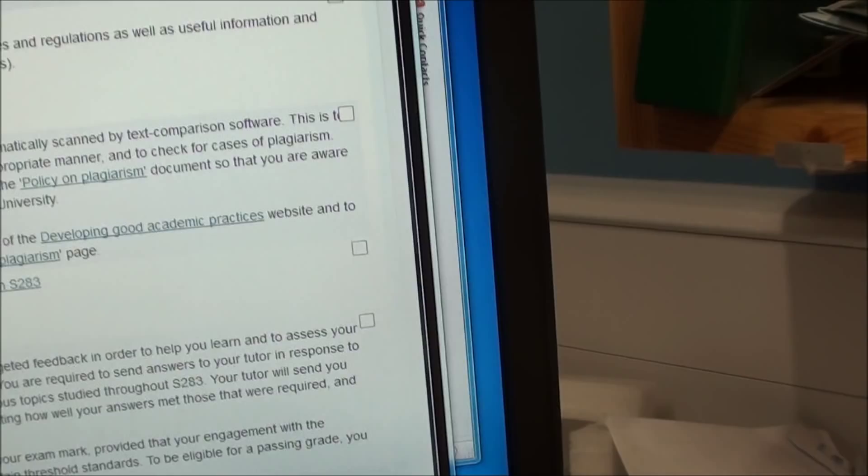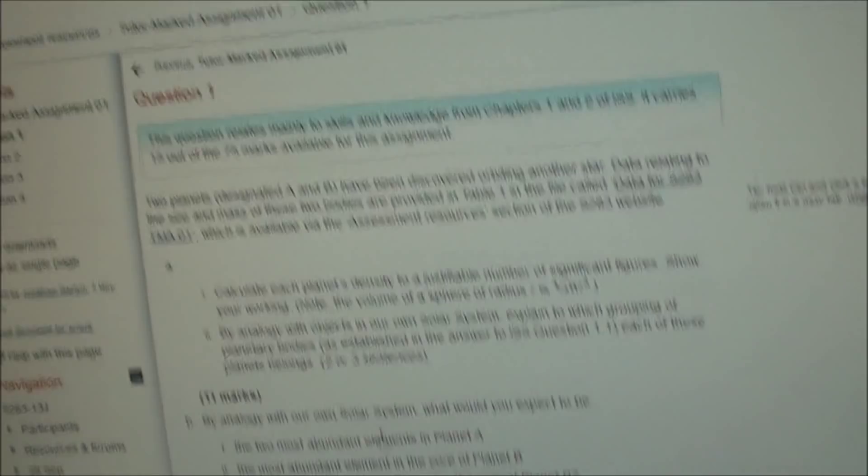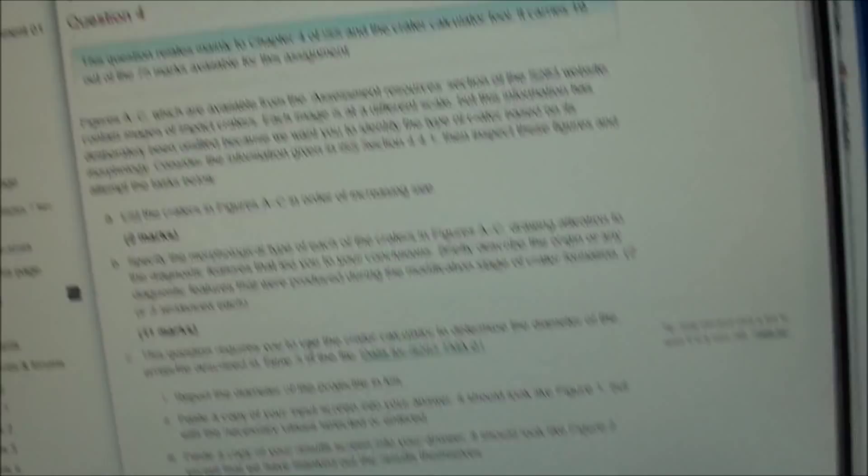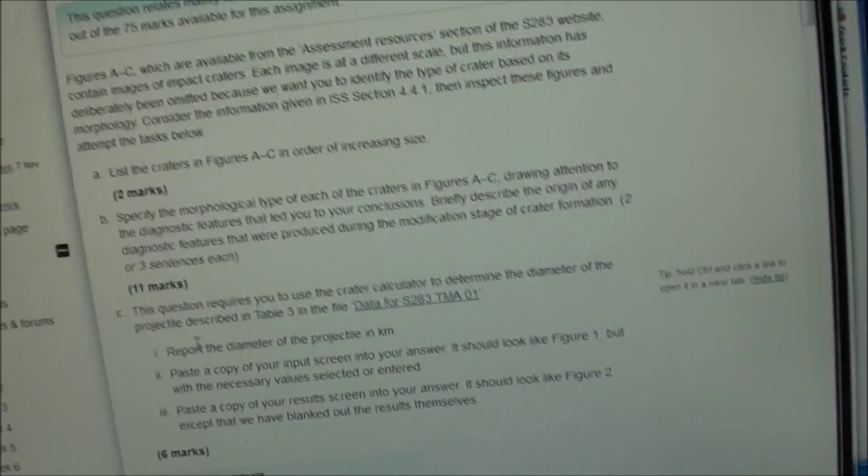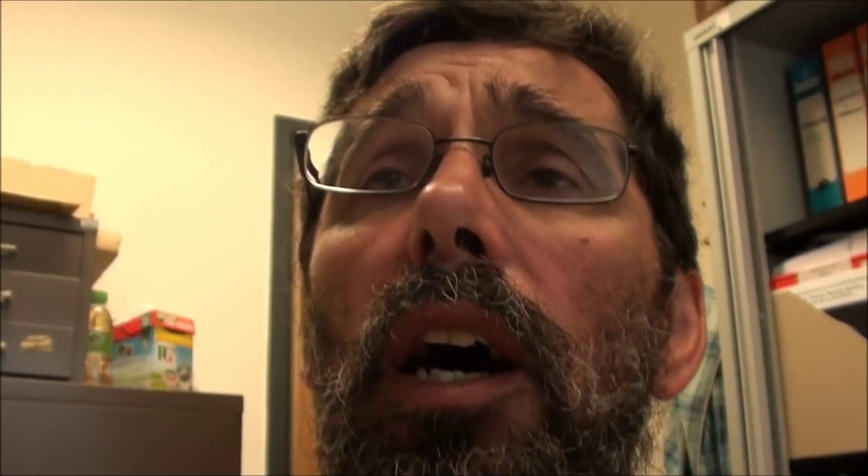I'll tell you about the assignments. There are four tutor-marked assignments, TMAs. You get them from Assessment Resources. And here's TMA1, its cut off date. Click on that to get to it. Some general information. And here's question one. And click on to question two. And so on. One of the questions has some figures. Here's one of the figures. That's a question about cratering on airless bodies.